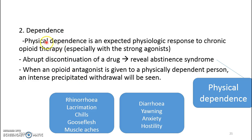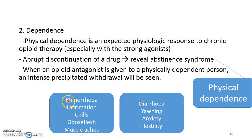Physical dependence is an expected physiological response to chronic opioid therapy, especially with a strong agonist. It can be revealed by abrupt discontinuation of the drug, or when an opioid antagonist is given to a physically dependent person, an intense withdrawal will be seen — including rhinorrhea, lacrimation, chills, goose flesh, muscle aches, diarrhea, yawning, anxiety, and hostility.